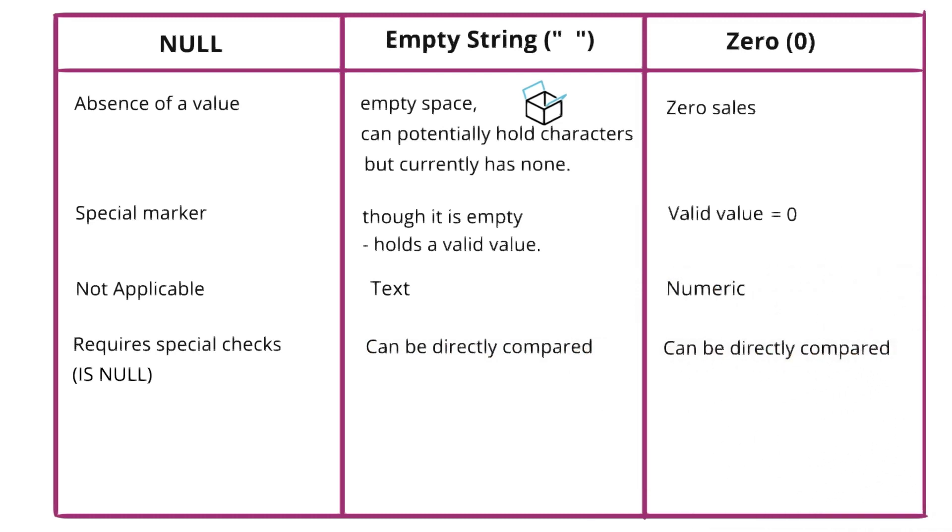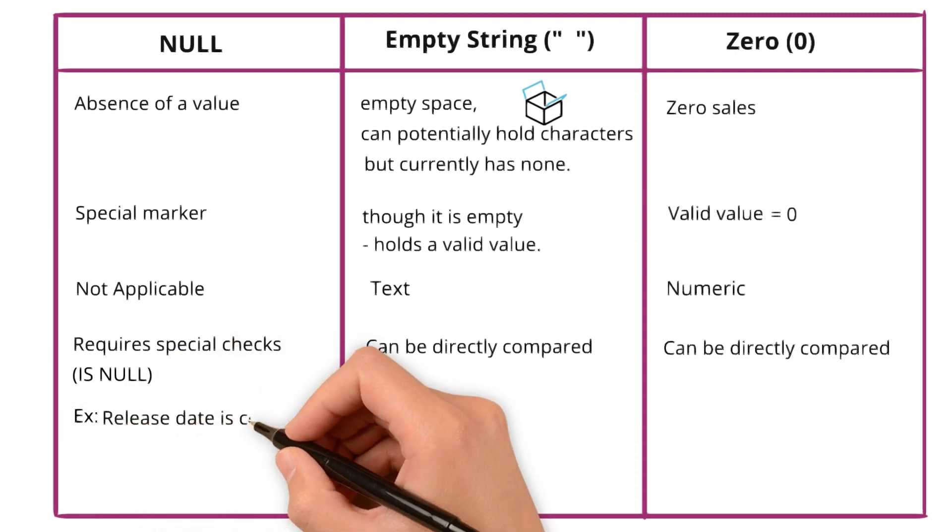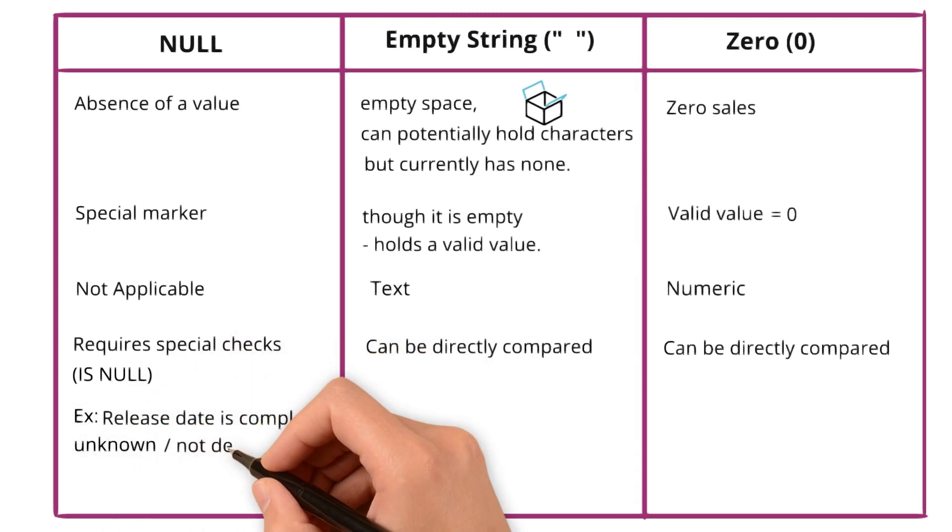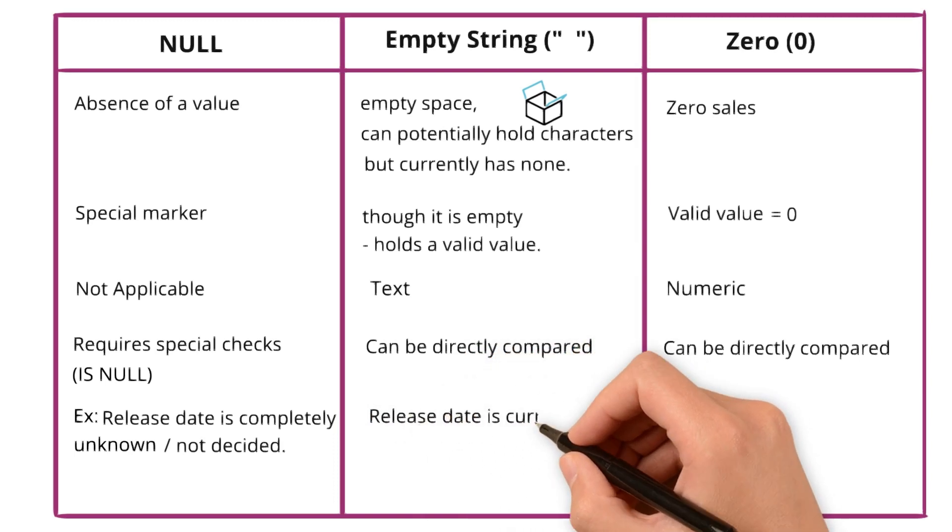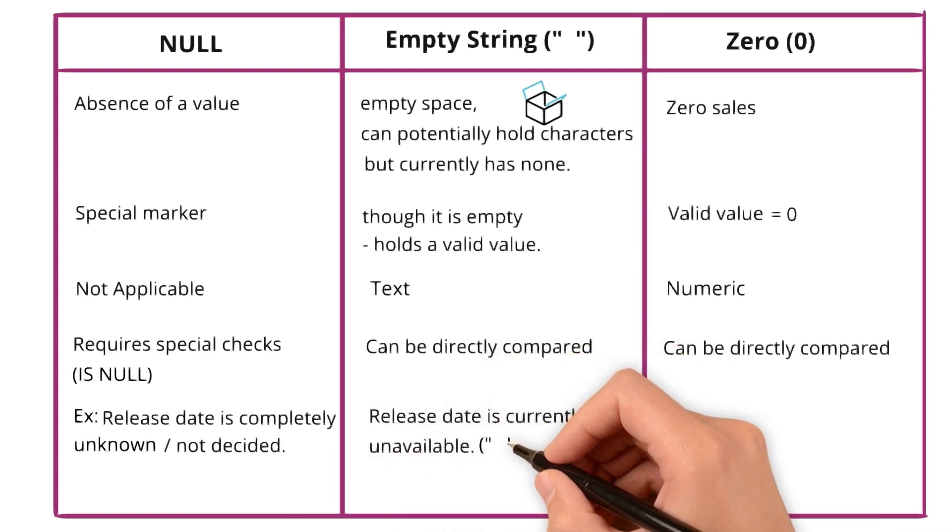Let's look at the examples. For null, the product's release date is completely unknown or hasn't been decided yet. In this case, the release date of the product is represented with null. For empty string, the product information is being entered but the release date is currently unavailable and empty string is used as a placeholder for that.